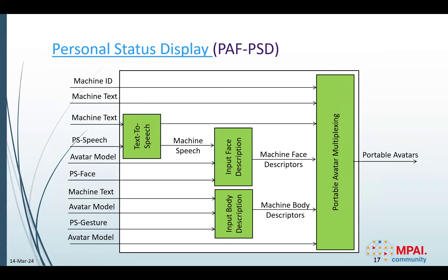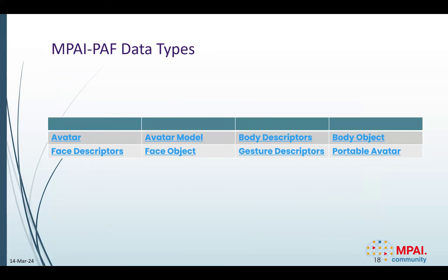Personal status display allows a machine to synthesize a portable avatar based on provided text, speech, the avatar model, and its personal status components. In our use case, we use several data types which are available at the links included on this page.